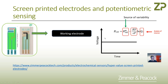So those were some comments about using screen printed electrodes for potentiometric sensing. If you want to make good progress using screen printed electrodes for potentiometric measurements, you probably have to do a single-point calibration so you at least know what the offset value is. Any questions — contact us at Zimmer and Peacock. Thanks very much.